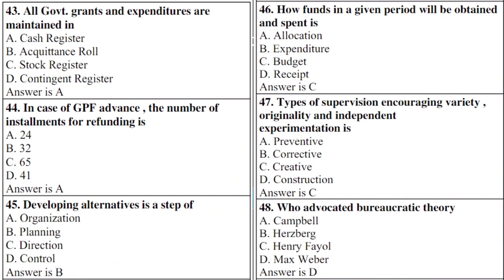Question 45: Developing alternatives is a step of — right option is B: planning. Question 46: How funds in a given period will be obtained and spent is — right option is C: budget.